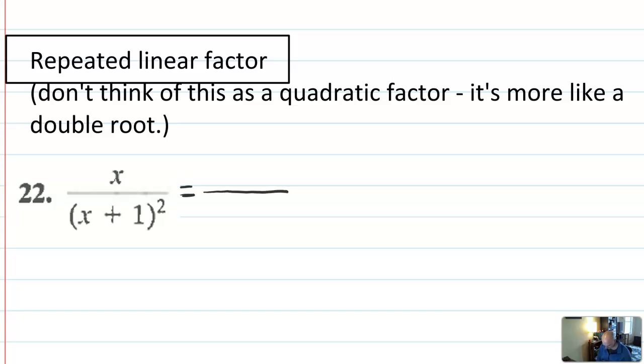Here's how you're going to set up something if you have a repeated linear factor. You're going to, again, set up your two fractions. The bottom of the first fraction, it's just going to have x plus one to the first. The bottom of the second fraction is going to have x plus one to the second power. And then on the top of each fraction, you're just going to put, again, some coefficients like a and b.